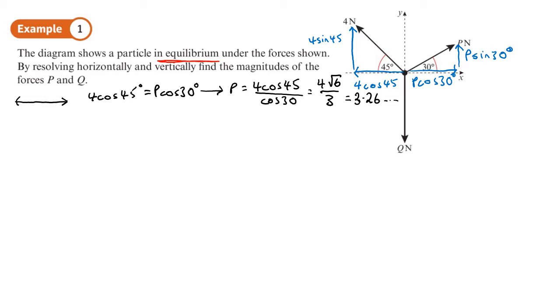And up we have 4 sin 45 and P sin 30. We've worked out P already. And that will equal what goes down, which is Q. So the first thing I'm going to do is to replace P with the exact value that I got for P. So that's going to be 4 root 6 over 3 times by sin 30. That will equal Q.